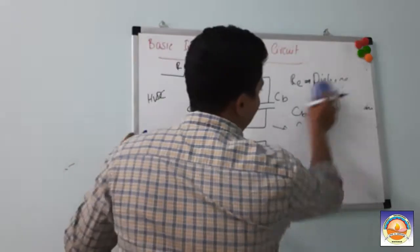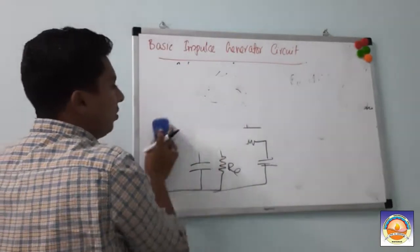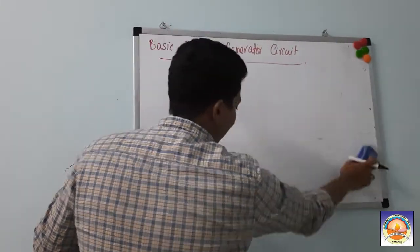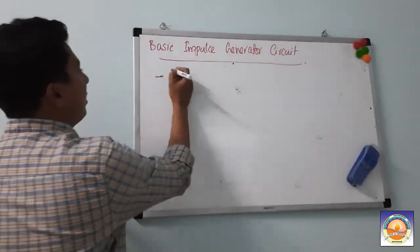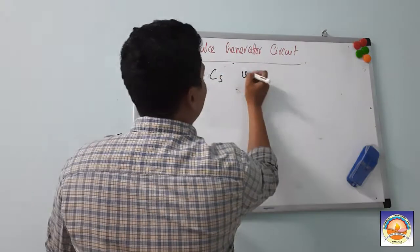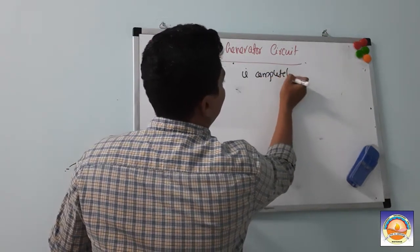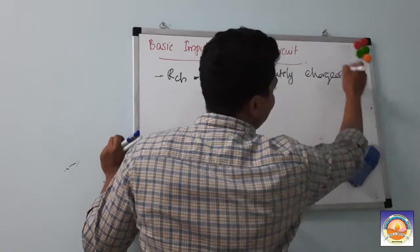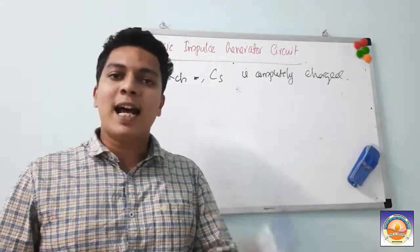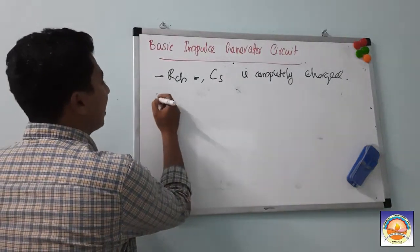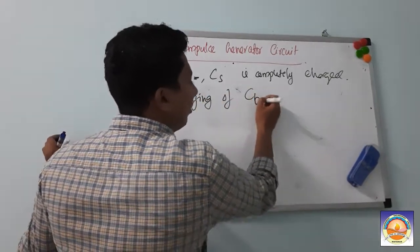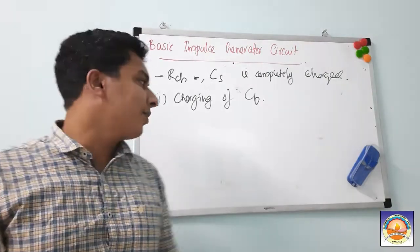Now let us get into the working. There are two processes. The first process is that using RCS, your source capacitance CS gets completely charged. Let us assume that already happened. Once CS is completely charged, you then have the charging of your load capacitance CB.